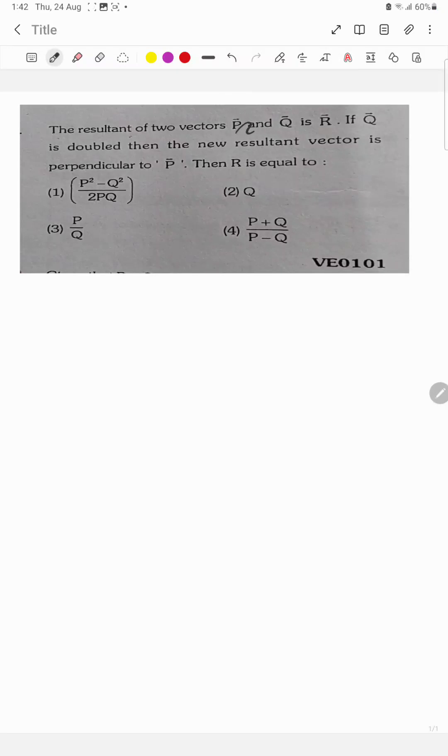The resultant of two vectors P and Q is given as R. If Q is doubled, then the new resultant vector is perpendicular to P. Then R is equal to? First, let us make the diagram.